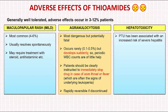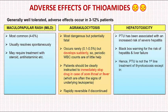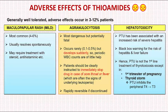The third important adverse effect is hepatotoxicity. Propylthiouracil in particular has been associated with an increased risk of severe hepatitis, and there is a black box warning for the risk of hepatitis and liver failure. So in routine cases, propylthiouracil is not the first-line treatment of thyrotoxicosis except in three situations: A) first trimester of pregnancy, B) thyroid storm, because it inhibits peripheral T4 to T3 conversion, and C) if the patient is allergic to carbamazole.